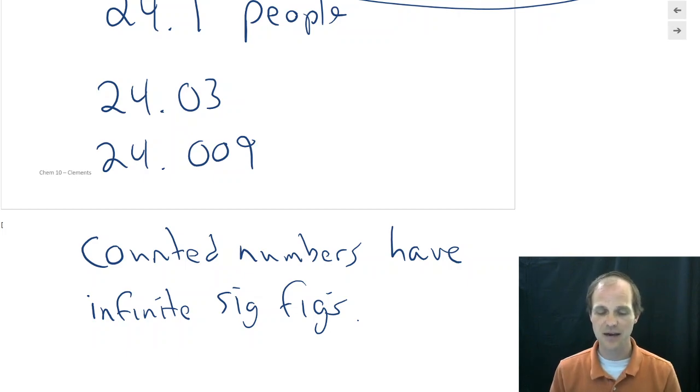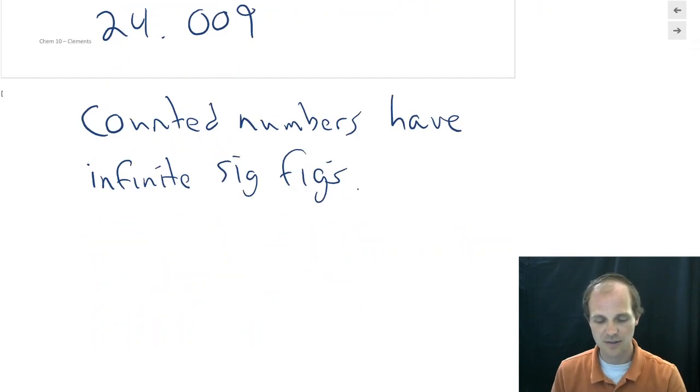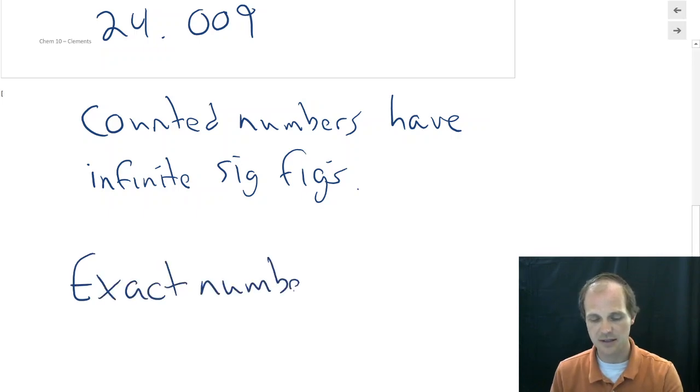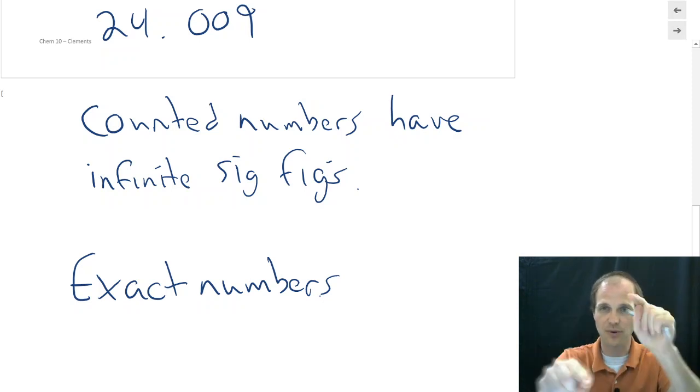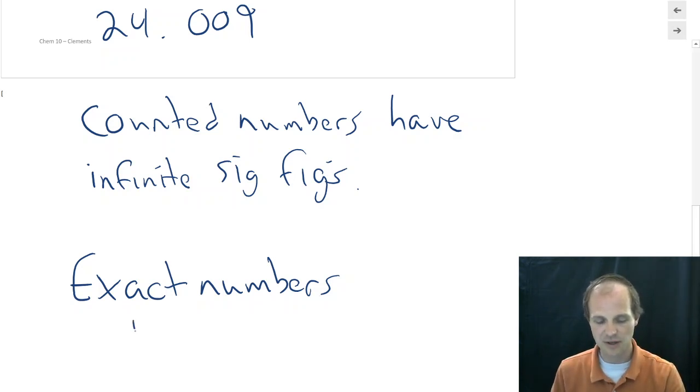Now, another example of counted numbers are things that we call exact numbers. In fact, some people will use these interchangeably, counted and exact. I use them slightly different. Counted means I actually went and I could point at things in 1, 2, 3, 4, 5. Exact numbers are usually what we call definitions.